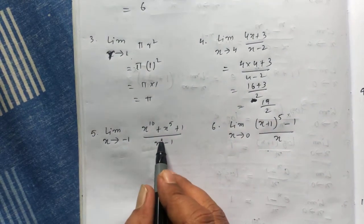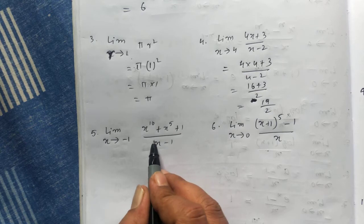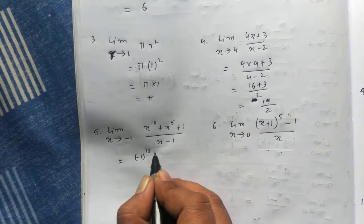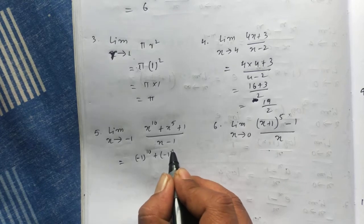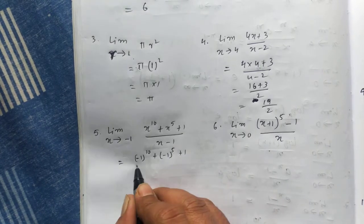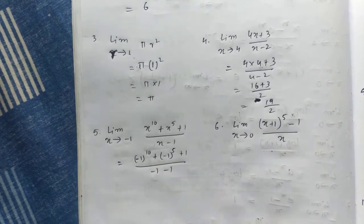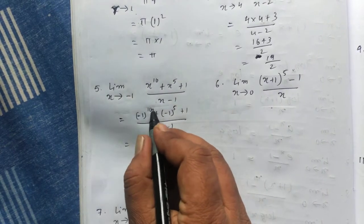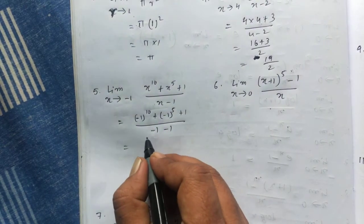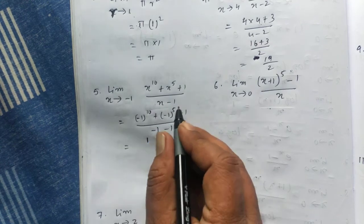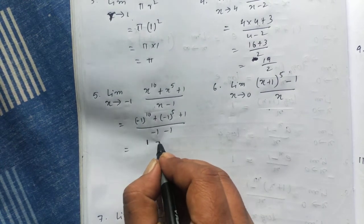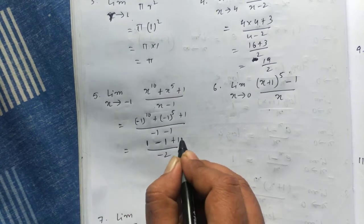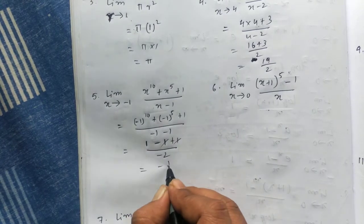If I put minus 1, the denominator is not becoming 0, so we can put the value directly. Minus 1 to the power 10 plus minus 1 to the power 5 plus 1, divided by minus 1 minus 1. Power 10 is even, so it will always be positive. Power odd for a negative number is negative. So minus 1 plus 1 cancel, and you are getting minus 1 by 2.